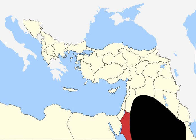1946, Britain ends its mandate over Transjordan, granting full independence to the Kingdom. 1947, Dead Sea Scrolls discovered. 1947–48, thousands of Palestinians flee Arab-Israeli fighting to the West Bank and Jordan. 1948–49, the Arab-Israeli war concludes with the armistice agreements. The territory of mandatory Palestine is divided between Israel, Jordan (changed from Transjordan), and Egypt.